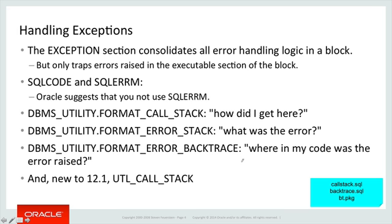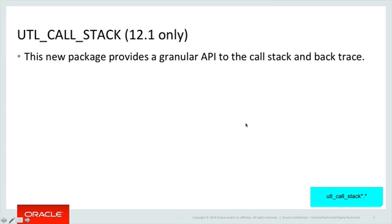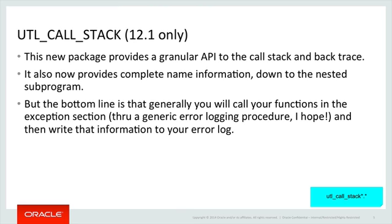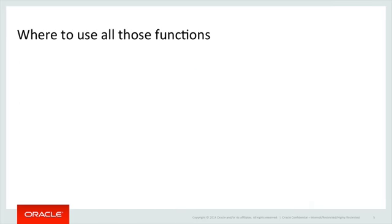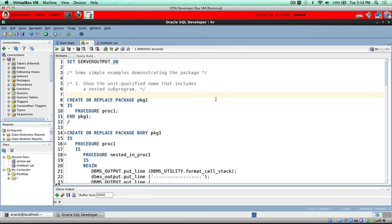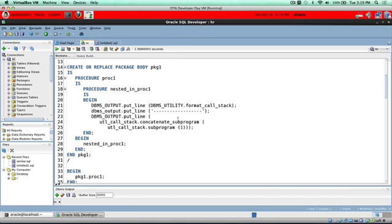In 12.1, Oracle added a new package. UTL_CALL_STACK provides a much more granular API to the call stack and the backtrace. The most important thing is that you can now get the full name information down to a nested subprogram unit in terms of where you are in the call stack. The API gives you the ability to parse different elements and pull out very minute parts of the stacks, which can be helpful. But in general, all you're going to be doing is sending this information out to a table and looking at it afterwards.